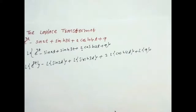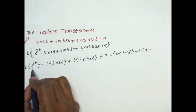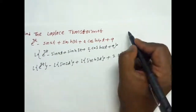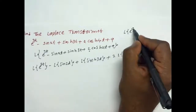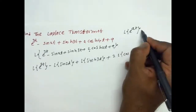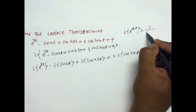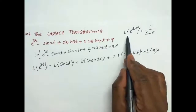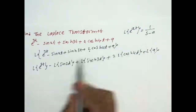If we have the formula, the same way we will do it. First we have to write the Laplace of e^(3t). The Laplace of e^(at) is 1/(s minus a). So the Laplace of e^(3t) is 1/(s minus 3).